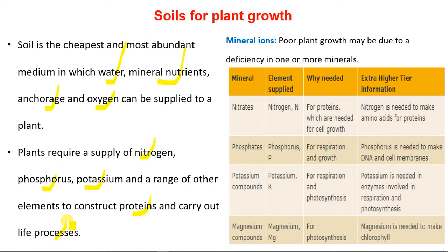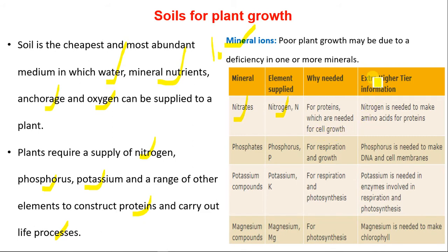Soil as a medium for plant growth — first, mineral ions. Poor plant growth may be due to deficiency in one or more minerals. Mineral ions include nitrate, which supplies nitrogen; nitrogen is used to make protein, needed for cell growth and division. At a higher tier, nitrogen is needed to make amino acids, which are used to make proteins.